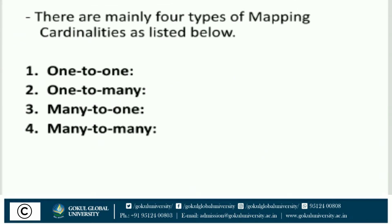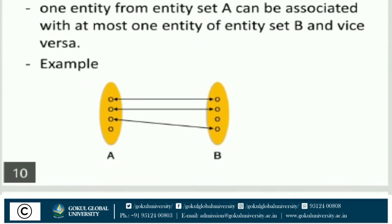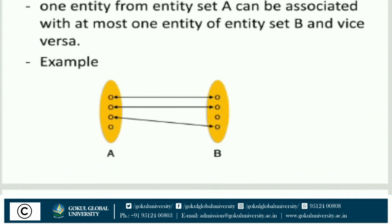There are mainly four types of mapping cardinalities: one-to-one, one-to-many, many-to-one, and many-to-many. Number one is one-to-one mapping cardinality: one entity from entity set A can be associated with at most one entity of entity set B, and vice versa. For example, there are four entities in set A and four entities in set B, and only one entity is associated with another entity from A to B.